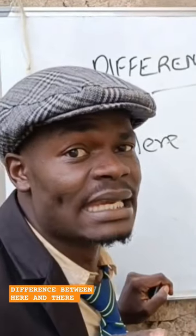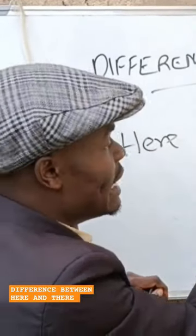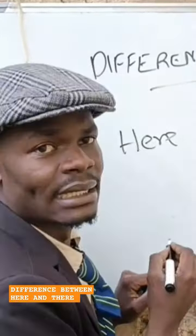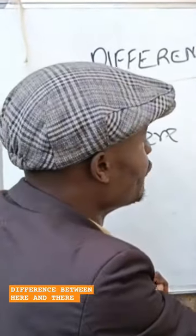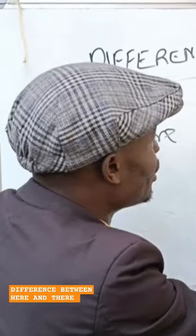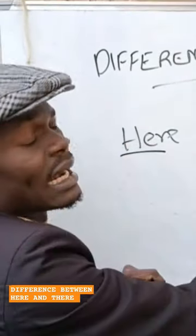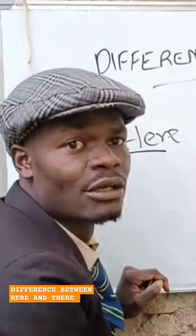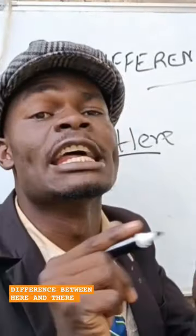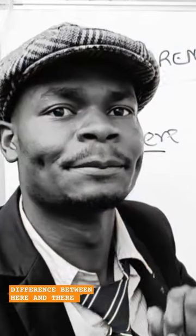And the difference is the letter T. If we remove the letter T, we remain with here and here. So what makes here and there different is the letter T.